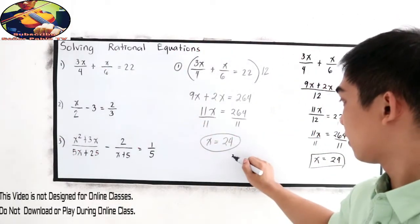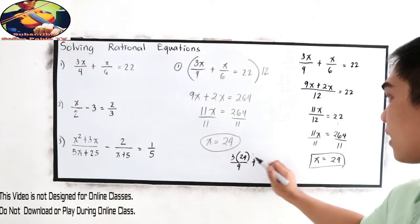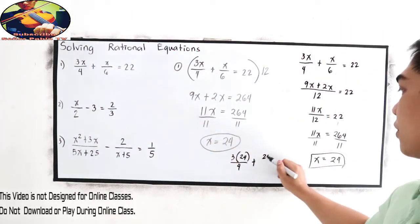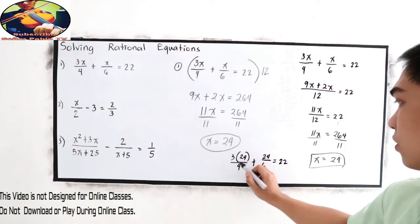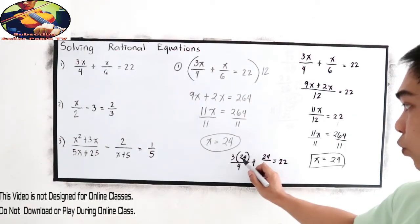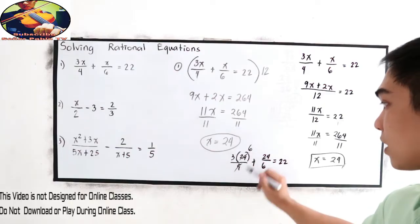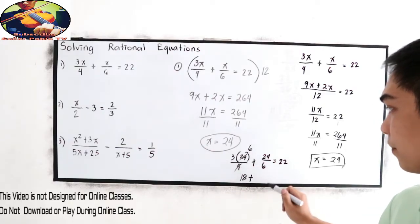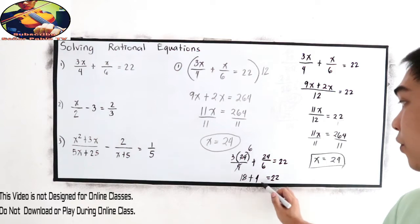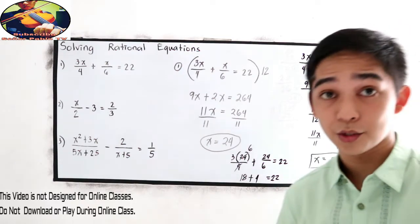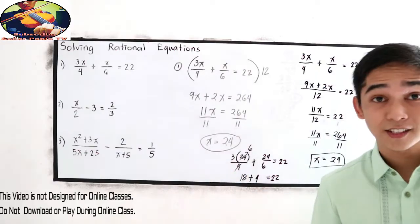Substitute x = 24: 3 times 24 over 4, plus 24 over 6, is equal to 22. Using cancellation: 24 divided by 4 is 6, so 3 times 6 is 18. Plus 24 divided by 6 is 4. So 18 plus 4 equals 22, which equals 22. Our value of x is correct.